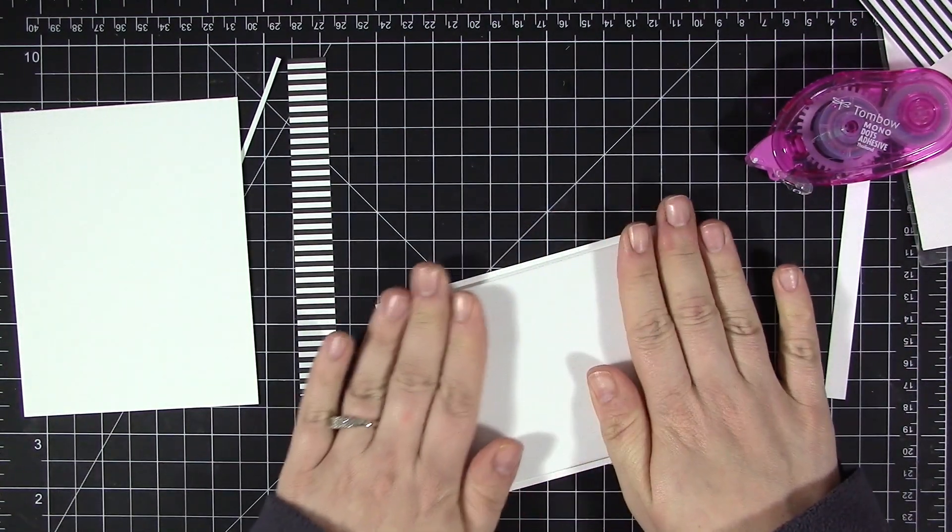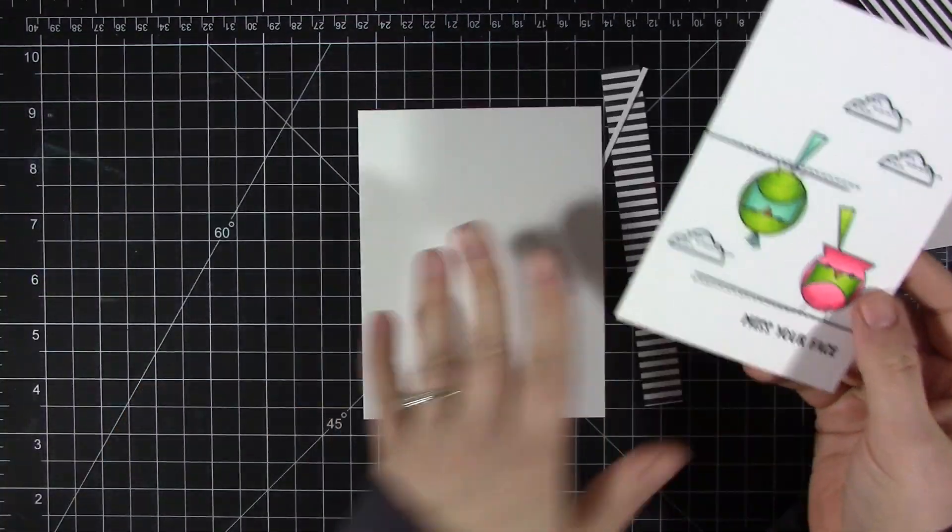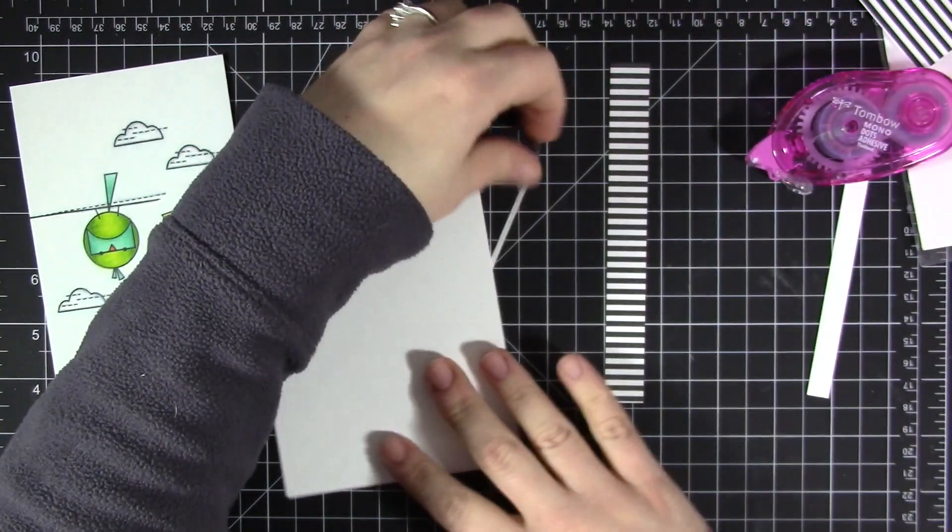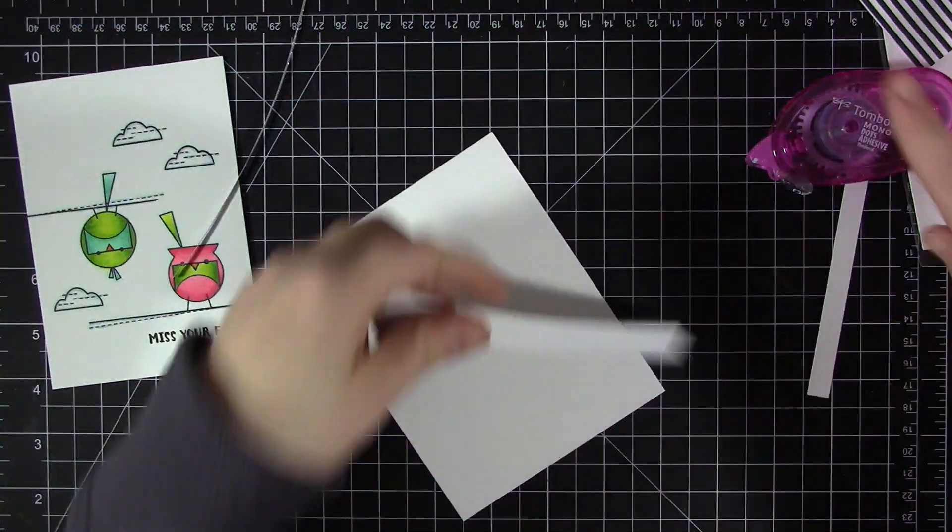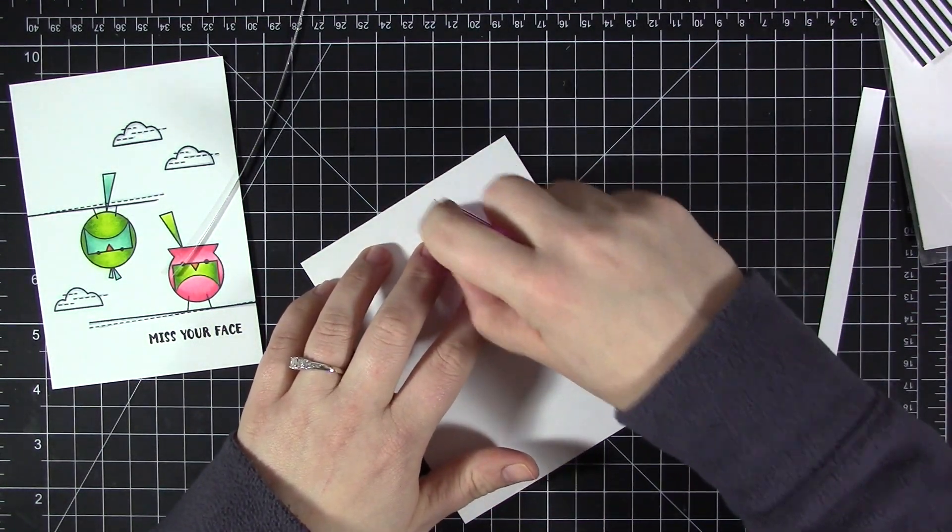I'm also adding a piece of fun foam to the back of this because I want to have this panel raised off the card, but I don't want to have any sagging in the center area from using foam adhesive. So I went ahead and used the craft foam so that it fully adds that dimension to the whole entire piece.